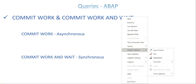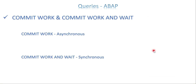Let's understand the terminology: commit work and commit work and wait, and how these two work. In SAP we normally have the terminology called asynchronous and synchronous. Commit work works as an asynchronous process, and commit work and wait works as a synchronous process.